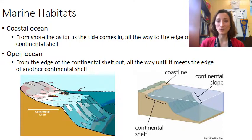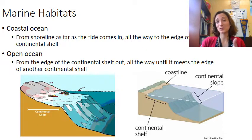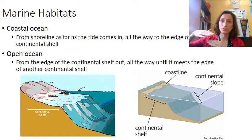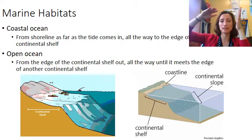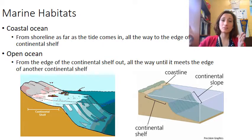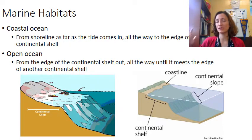The open ocean consists essentially of where the coastal ocean ends — at the edge of the continental shelf, all the way down to the bottom of the ocean, all the way out. So from the top of the ocean to the bottom, from the extension away from the continental shelf until it meets another continental shelf across the ocean, whether it be across the Pacific, across the Atlantic, etc.